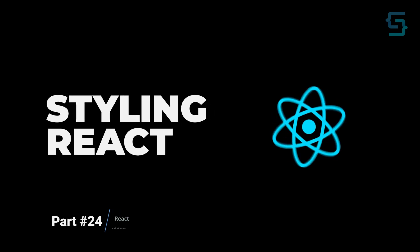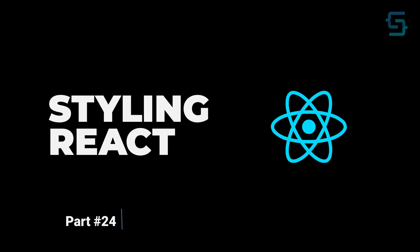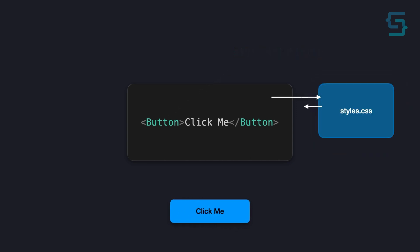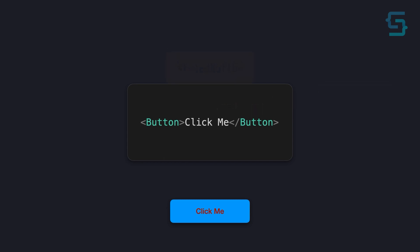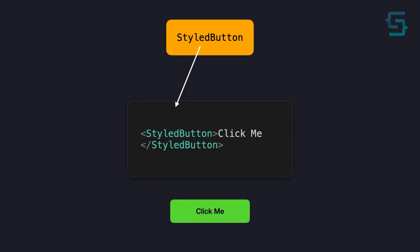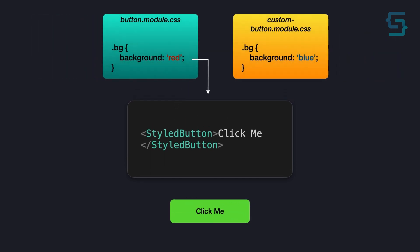Hi and welcome to another tutorial. In this one, we're going to check different ways to style your React applications. First, we're going to learn how to style your components using inline styles. In the second approach, we're going to learn how to use predefined CSS classes. After that, we're going to learn how to use styled components, which is one of the most popular ways to style your React application. And in the end, we're going to use CSS modules and see what benefits they bring to the table. So let's start.